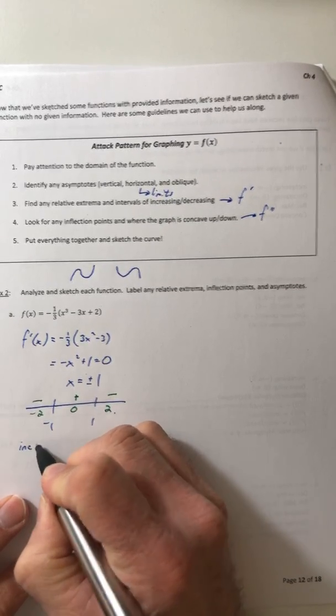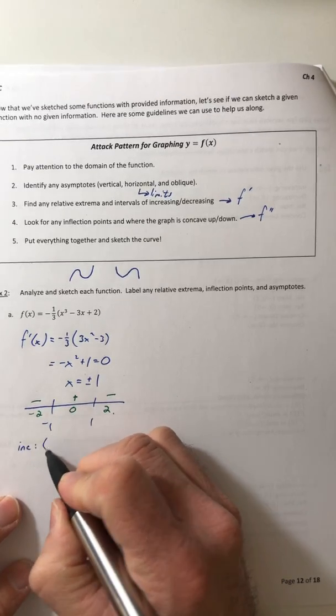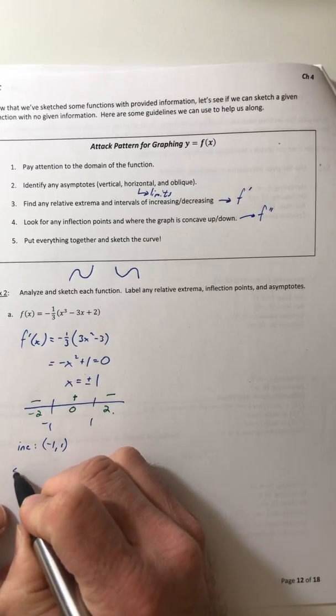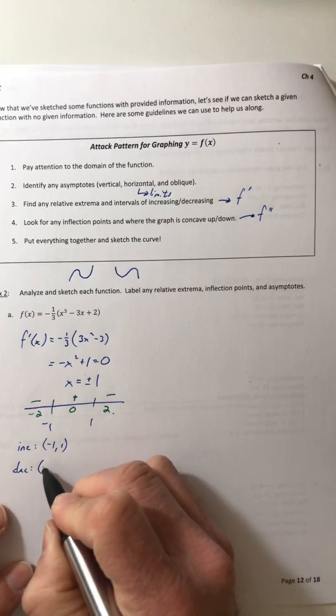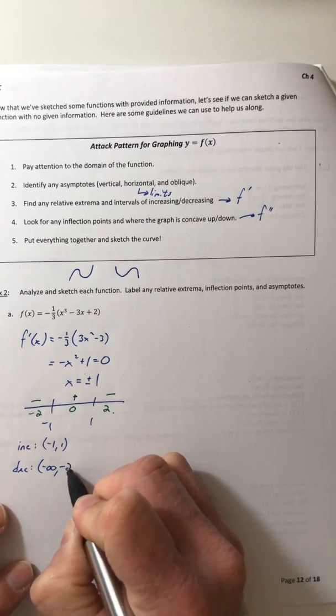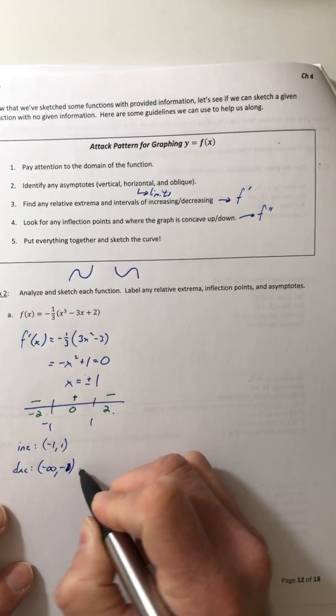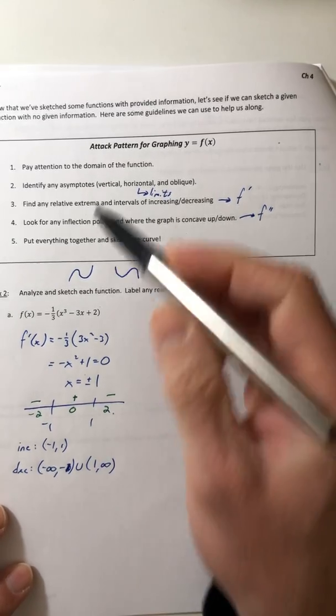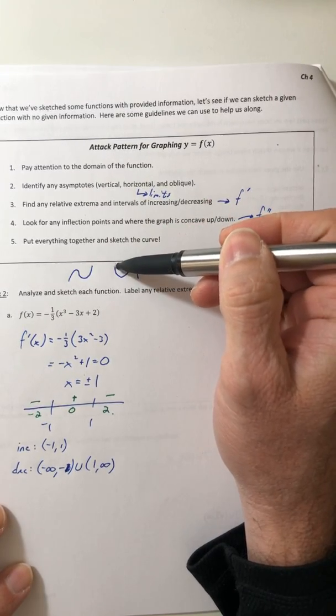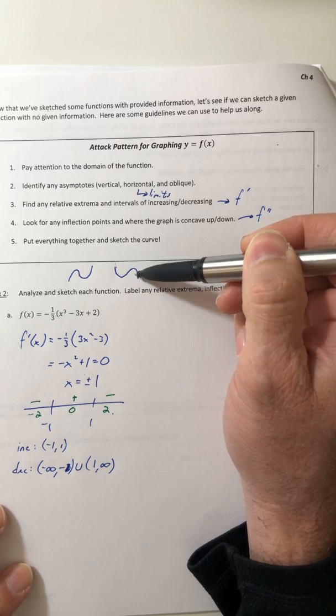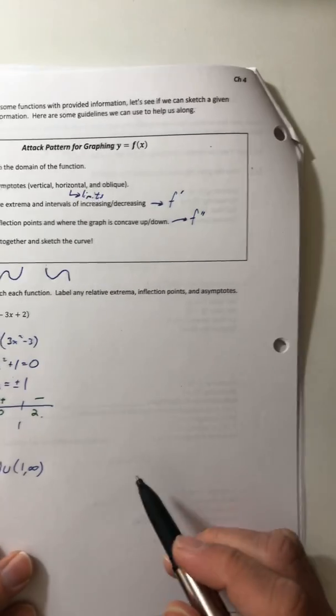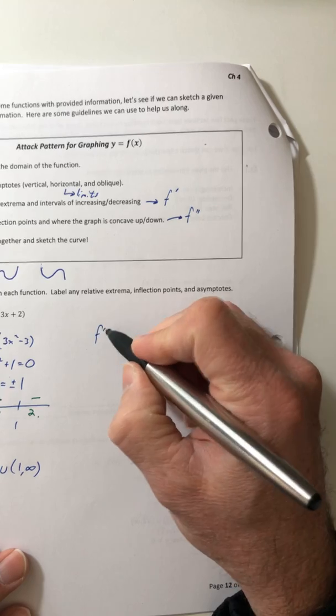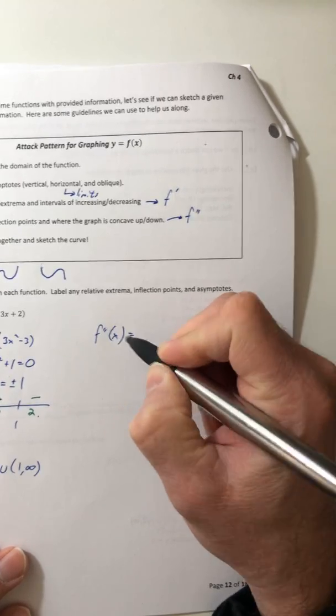So we know the graph is increasing from negative one to one and decreasing from negative infinity to negative one, union one to infinity, which goes along with this sketch right here. It decreases, and then increases, and then decreases again.